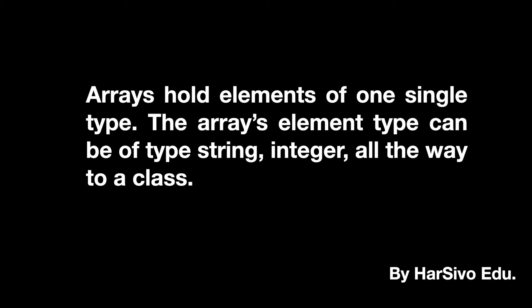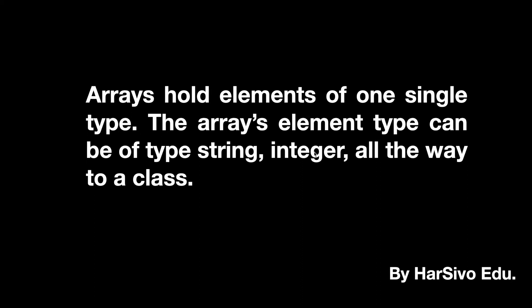What is Array? Array holds elements of one single type. Array's element type can be string, integer, and all the way to a class. What is a data structure? We store data. Array also stores data and it should be of a single type. So if you save strings you will have strings, integers will have integers. If you want to store different types, you use the 'any' data type in Swift. You can also save classes in an Array — basically we can store anything, but mostly we store one single type like string, integer, or sometimes classes.